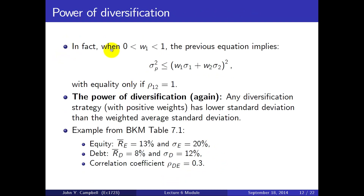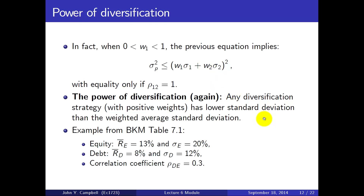When the portfolio weight w1 is between 0 and 1, so you're not shorting or using leverage, the portfolio variance is less than or equal to the square of the linear combination of standard deviations. It's only equal when the correlation is 1. When the correlation is less than 1, you actually reduce variance by mixing assets relative to the weighted average of standard deviations. This is once again the power of diversification: any strategy with positive weights has a lower standard deviation than the weighted average standard deviation.